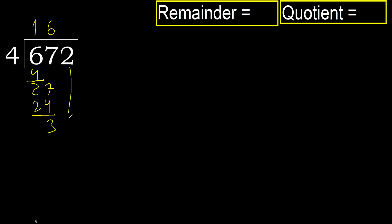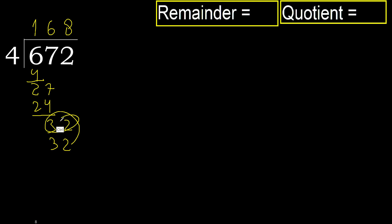Next, bring down: 32. 4 multiplied by 9 is 36 — that is greater. Multiply by 8 is 32 — not greater. Subtract.